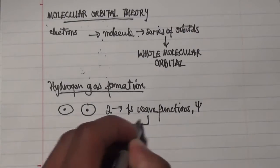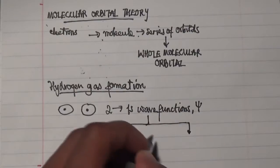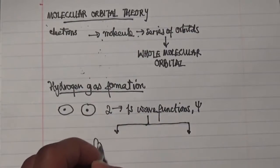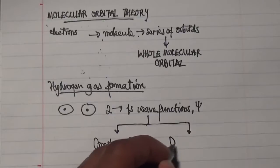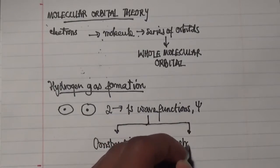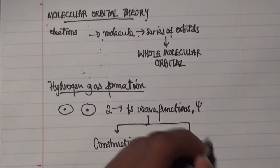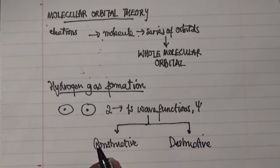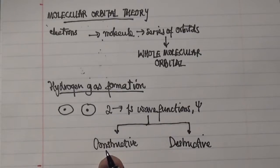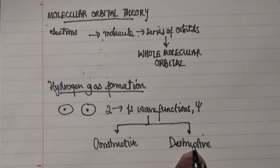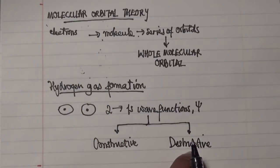The constructive process is called constructive interference, and constructive interference involves the adding of two mathematical functions. On the other hand, you have destructive interference, and what that implies is that you have the subtraction of two mathematical functions.